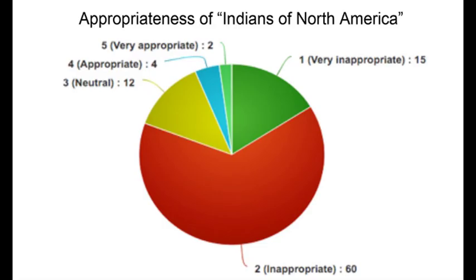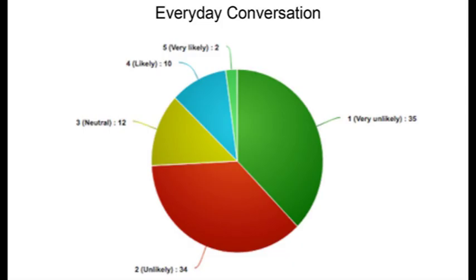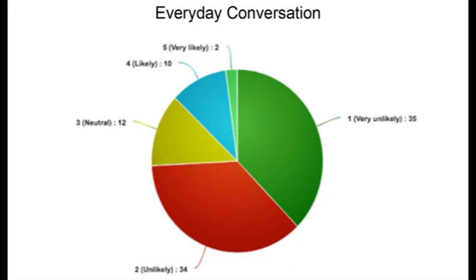Here are the preliminary results — data collection just wrapped up, so bear with me. This graph shows how people felt 'Indians of North America' was as a subject heading. Most people thought it was inappropriate. There were some who thought it was appropriate or very appropriate. Most people are also very unlikely to use this term in scholarly communication, interestingly more likely in everyday conversation, and most unlikely to use it in library signage. Most people preferred to use a tribal name instead of either 'Native Americans' or 'Indians of North America.'